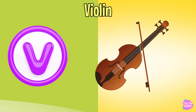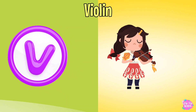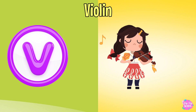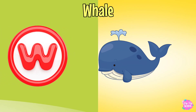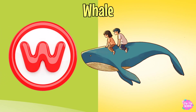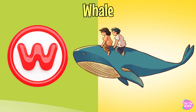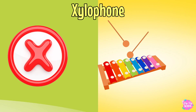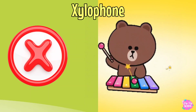Umbrella. V is for Violin. V-V-Violin. V-V-Violin. V-V-Violin. V, Violin. W is for Whale. W-W-Whale. W-W-Whale. W-W-Whale. W, Whale.